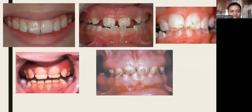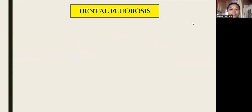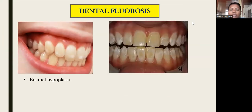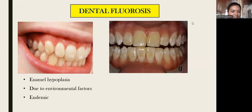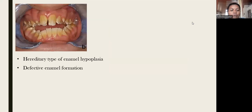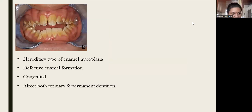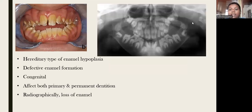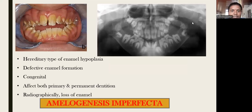Next is enamel hypoplasia. In enamel hypoplasia there is environmental and hereditary type. Dental fluorosis is a type of enamel hypoplasia due to environmental factors like fluoride in drinking water; it is endemic and seen in a region with a family history of dental fluorosis. The hereditary type is defective enamel formation, known as amelogenesis imperfecta. It is congenital and affects both primary and permanent dentitions. Radiographically, there will be loss of enamel covering.